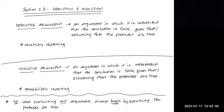We know from looking at the definition of arguments that every argument involves what we call an inferential claim. The claim is that the conclusion is supposed to follow from the premises, but the question we now want to address in this section about deduction and induction is how strongly the conclusion is claimed to follow from the premises.